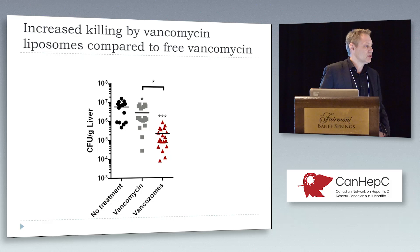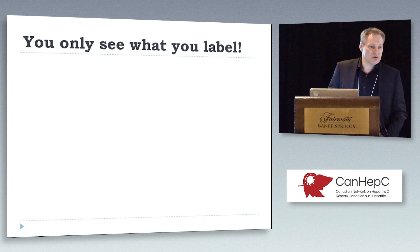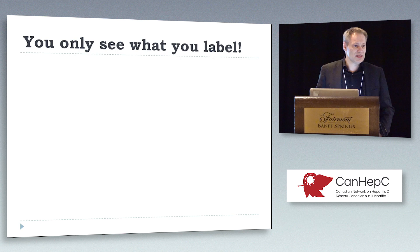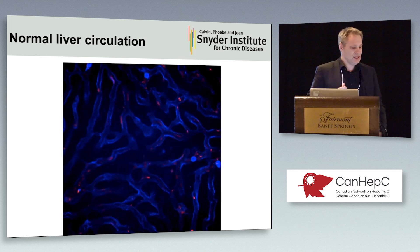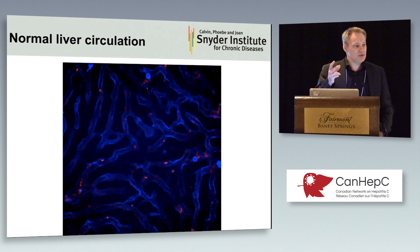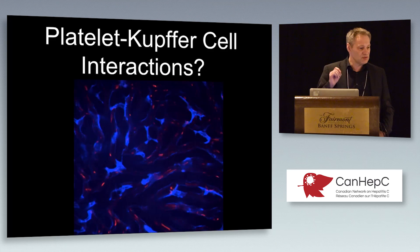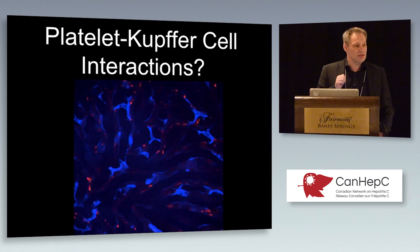Now I'm going to tell you something obvious: you only see what you label. A lot of people asked me whether I see platelets in my system and I said no — but we don't label them. So one day we decided to label them, and what we saw was fascinating. These little red dots are actually platelets. In the liver they'll come into view and disappear, come into view and disappear. If you label the Kupfer cells blue, what you can see is these red platelets skimming off the surface of all of these Kupfer cells. We found that fascinating.